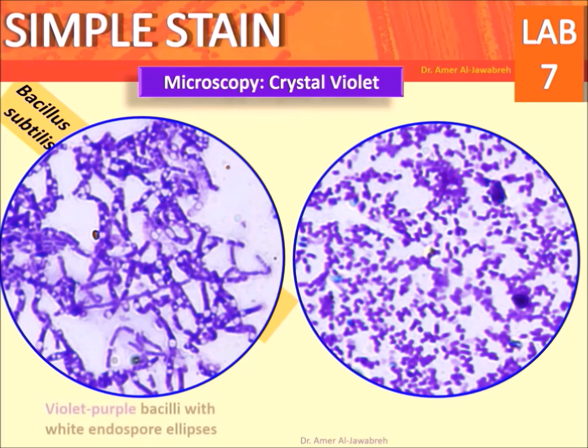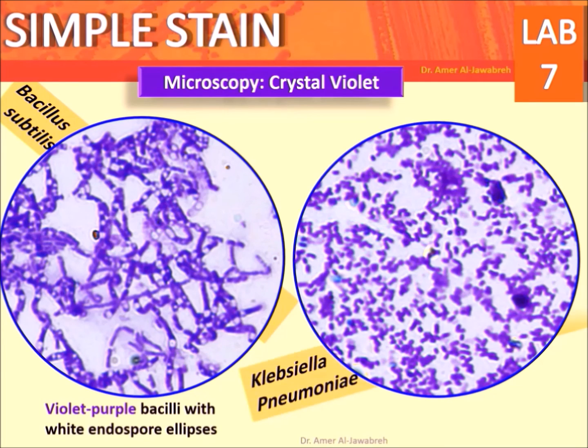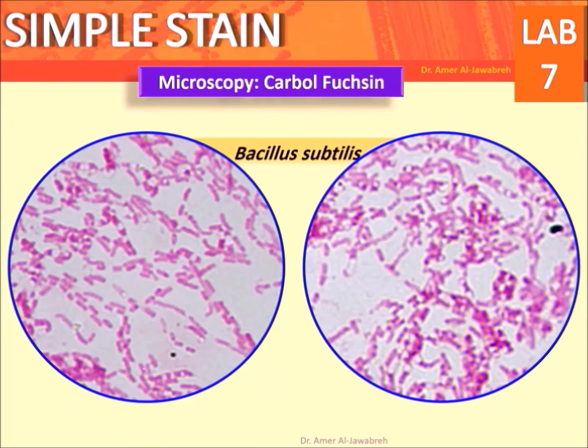Microscopy results — crystal violet: Bacillus subtilis appears as violet-purple bacilli with white endospore ellipses. Klebsiella pneumoniae appears as violet-purple bacilli.